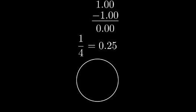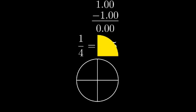Let's visualize this fraction as a part of a whole. Here's a circle representing one whole. We can divide it into four equal parts. One-fourth or zero point two five is equal to one of these four parts.